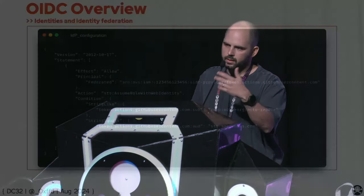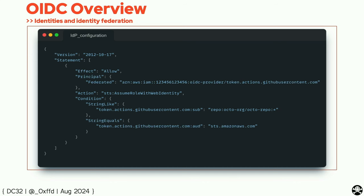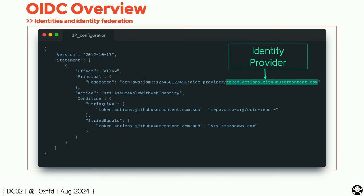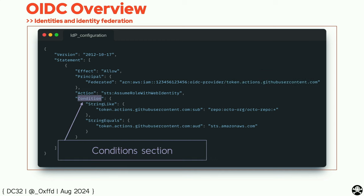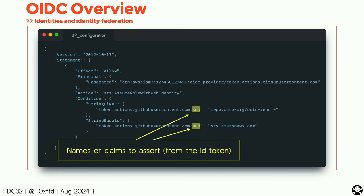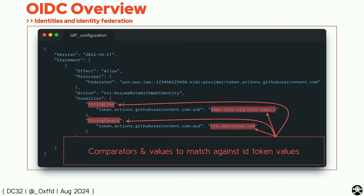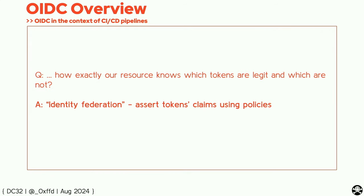The second component of the authZ is something called identity federation. As the name implies, it federates identities coming in. This is an example configuration for AWS specifically — the file is pretty simple. You have the identity name, the identity provider URL, and then you set up conditions for who can claim to be this identity. We see what claims we assert: we have the 'sub' and the 'aud' — short for audience. Then we can define comparators — string like or string equals — and set the values.